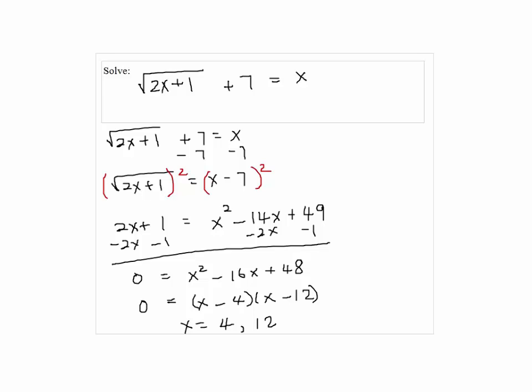Now, let's check our answers. If x equals 4, then we have 2 times 4 plus 1 plus 7, which is the square root of 9 plus 7, which is 3 plus 7 is 10, which is not 4. So 4 does not work.